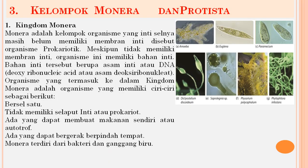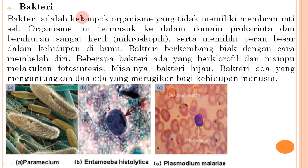Selanjutnya kita mempelajari kingdom Monera dan Protista. Monera adalah kelompok organisme yang inti selnya belum memiliki membran inti, disebut organisme prokaryotik. Meskipun tidak memiliki membran inti, organisme ini memiliki bahan inti berupa asam inti atau DNA. Organisme yang termasuk kingdom Monera memiliki ciri-ciri: bersel satu, tidak memiliki selaput inti (prokaryotik), ada yang dapat membuat makanannya sendiri (autotrop), ada yang dapat bergerak berpindah tempat. Monera terdiri dari bakteri dan ganggang biru.